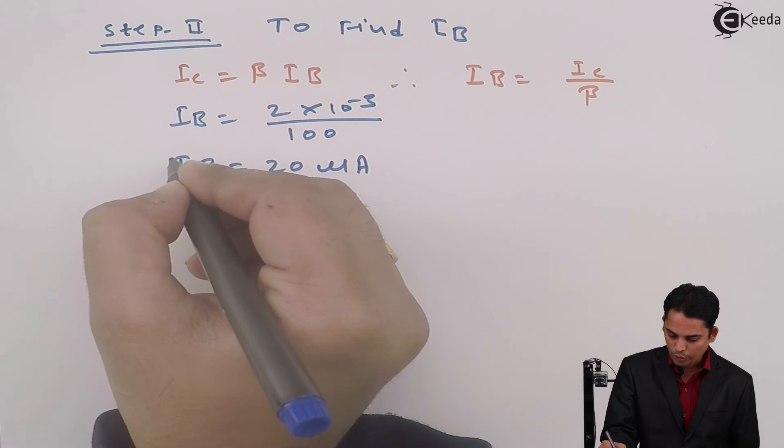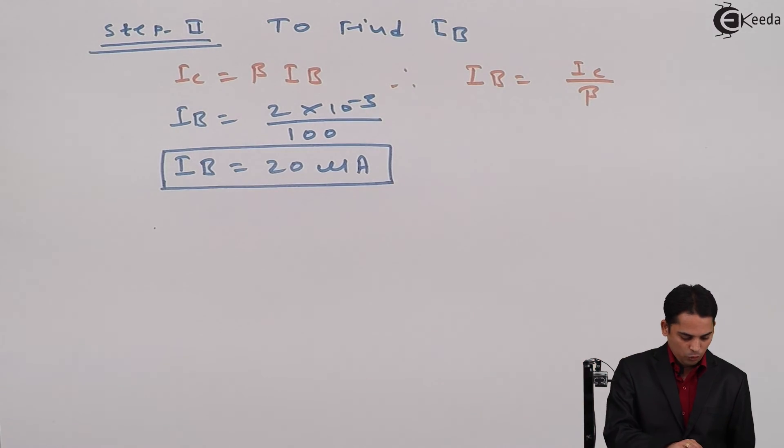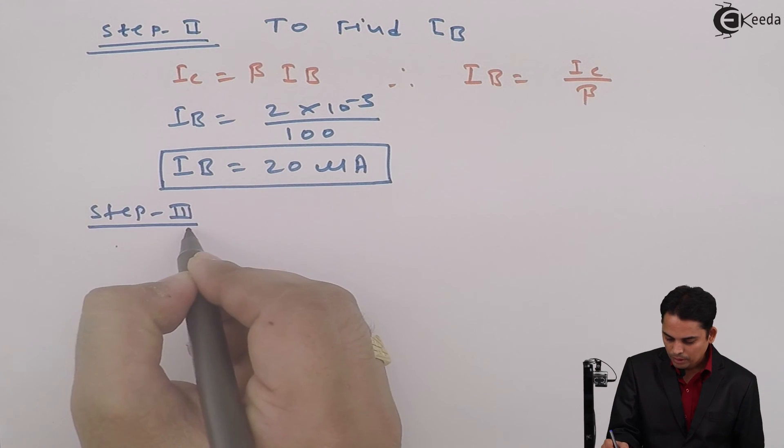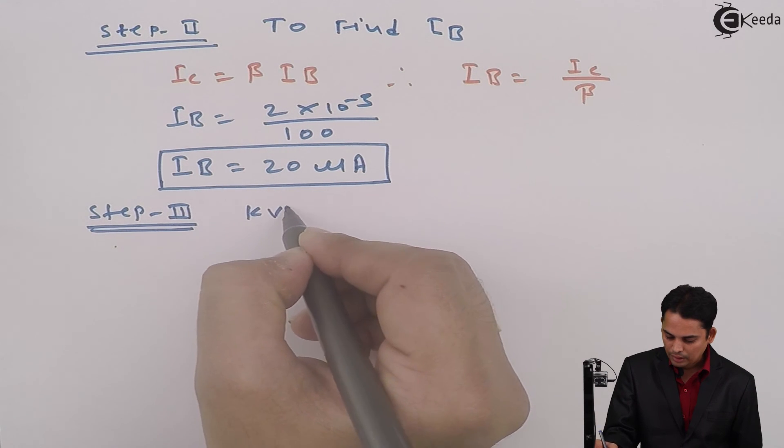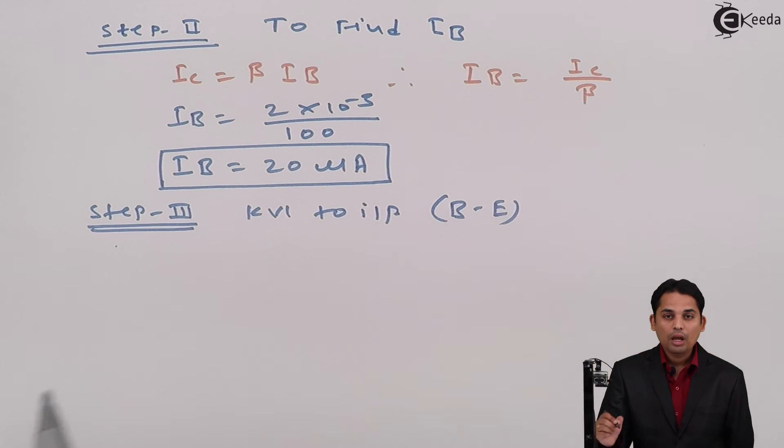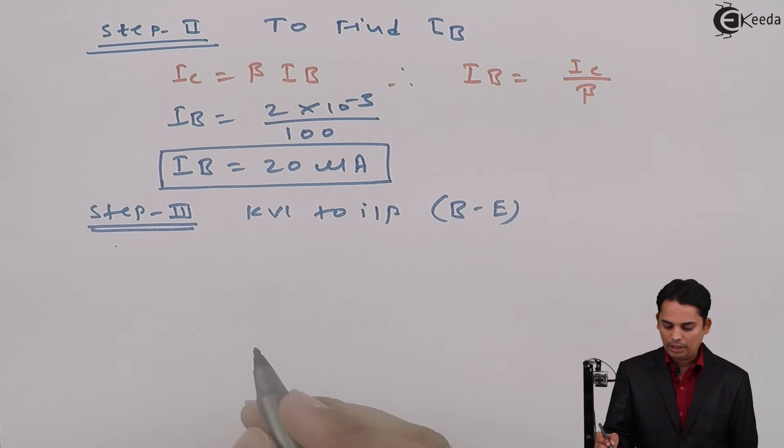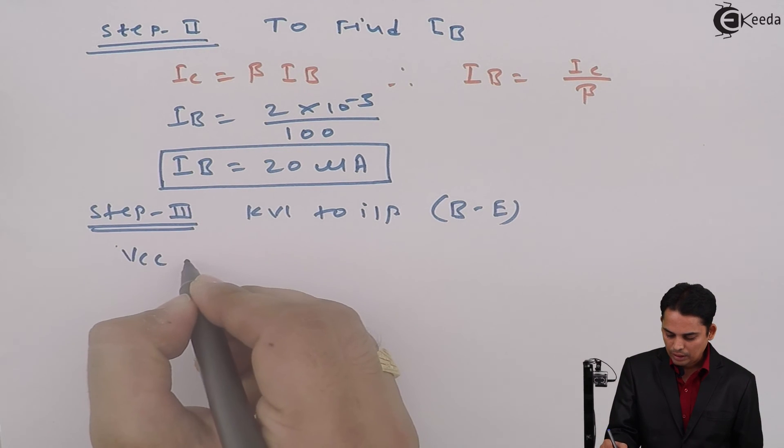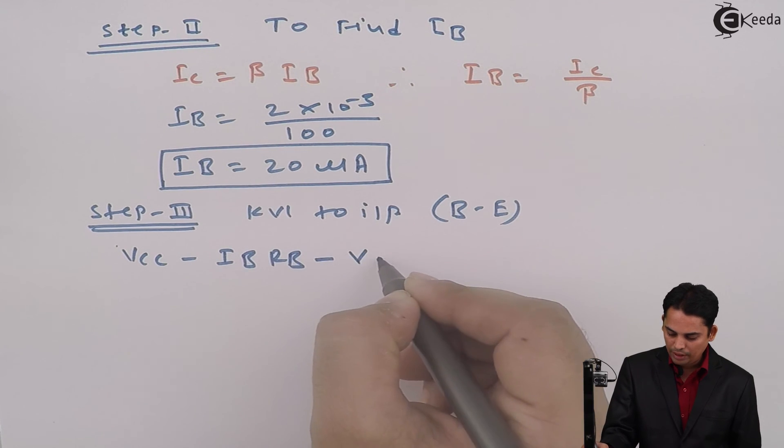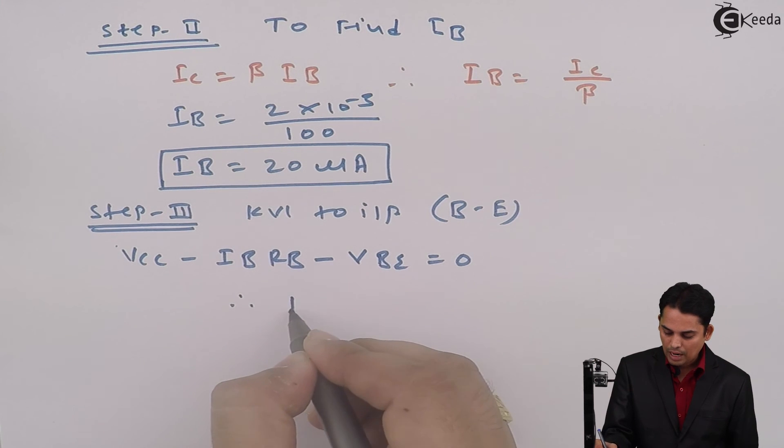Now what we'll do is we will apply KVL to the input, that is from base to emitter. If we apply KVL to the input, the equation will become VCC - IB·RB - VBE = 0.